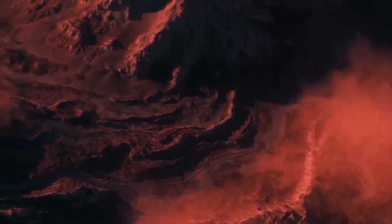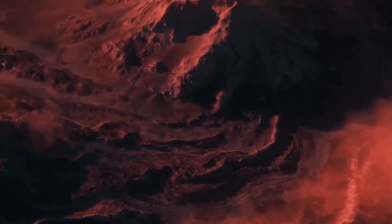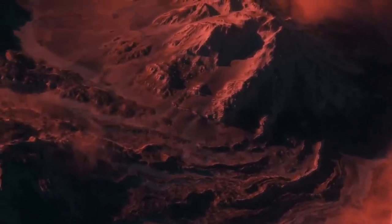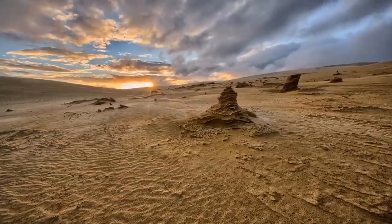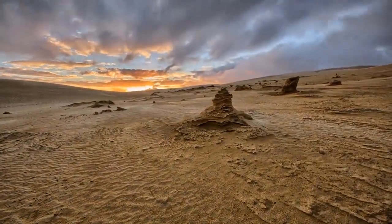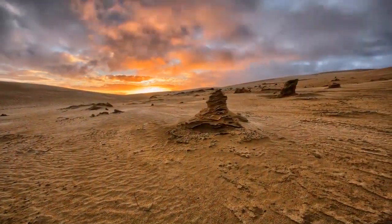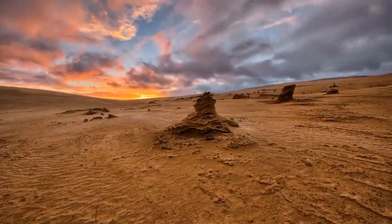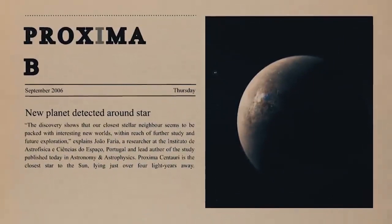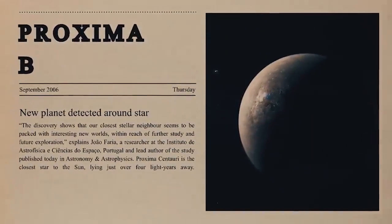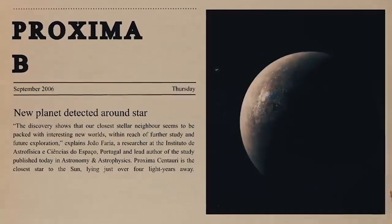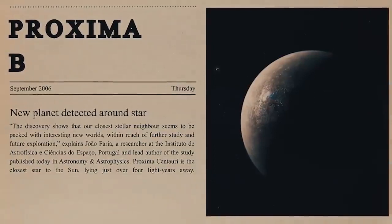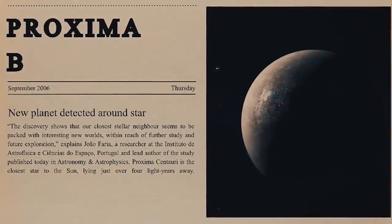The planet Proxima b is in a close orbit that exposes it to strong solar winds that can completely destroy its atmosphere. However, its close proximity to the star also provides enough sunlight for temperatures and liquid water that are similar to those on Earth. Because of its close proximity to the star, Proxima b is thought to be tidally locked, always showing the same side to the star as the Moon does in reference to Earth.